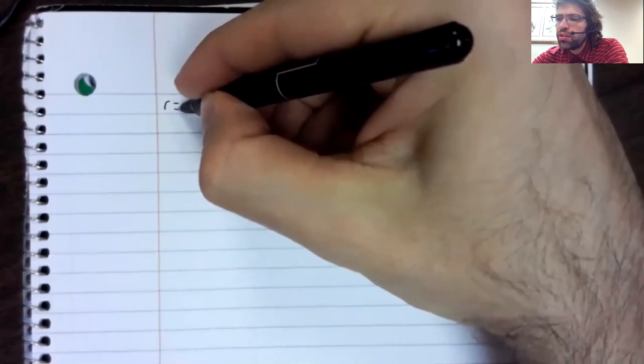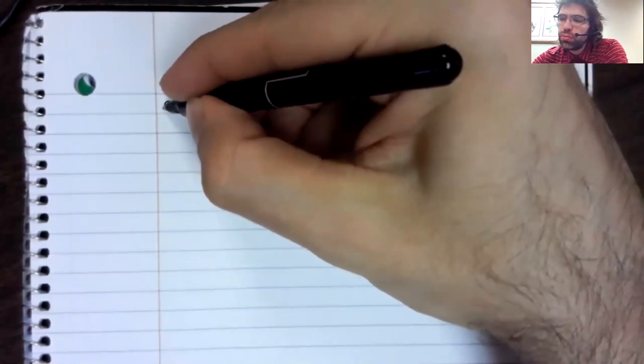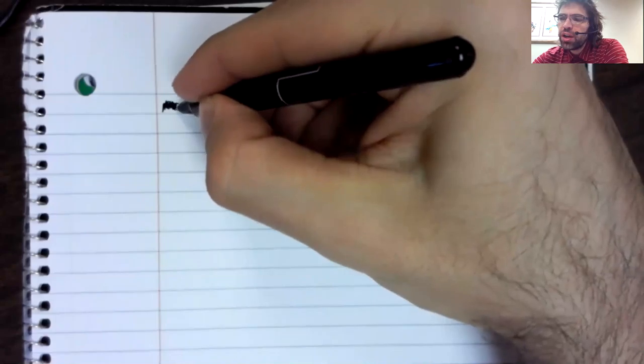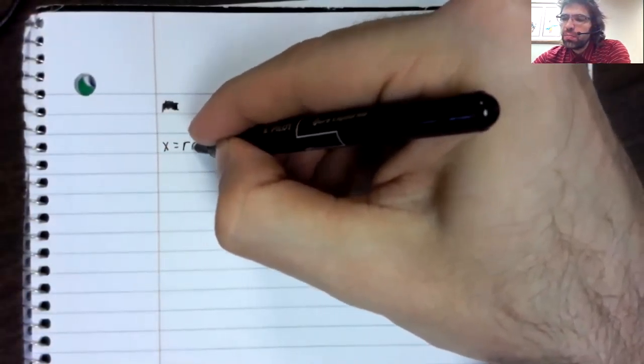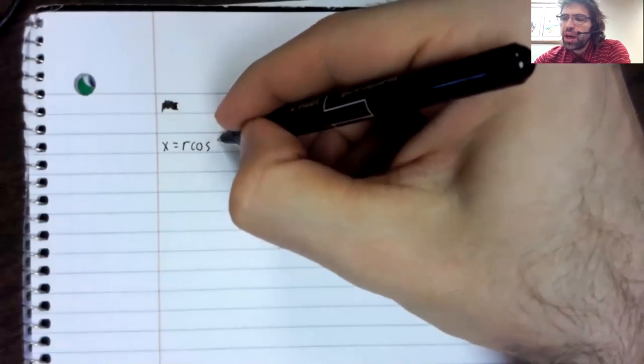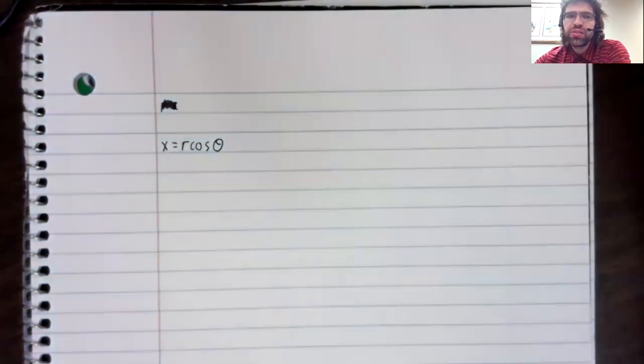Going the other direction is significantly less trivial. We do have some equalities we can use to try to convert from polar coordinates to rectangular coordinates. But it's more an art than a science.